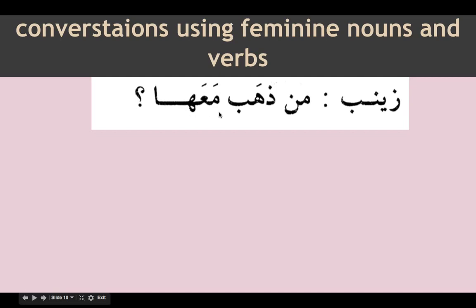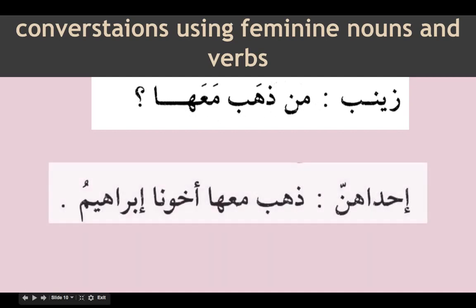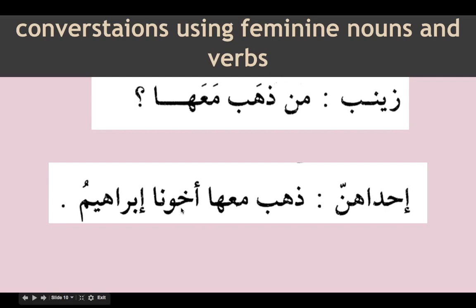Zainab asks: man zahaba maha — who went with her? Maa is zarf, ha is mudaf ilaihi. This is a jumlatul fi'liya. Zahaba is a masculine verb in three-letter form — the fa'il is not attached. We look for the fa'il by finding the sign of marfu in the sentence. Maa is a zarf, so it cannot be fa'il. Ha is mudaf ilaihi. We are still looking for who went with her.